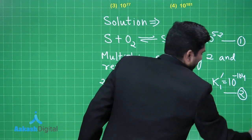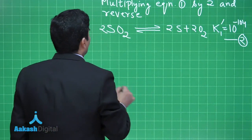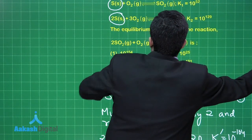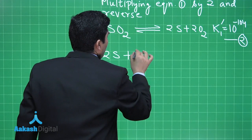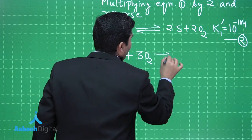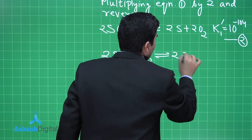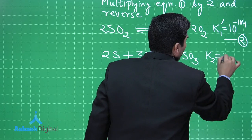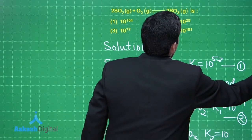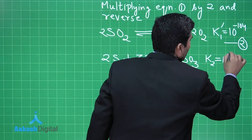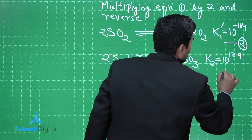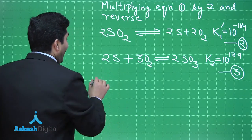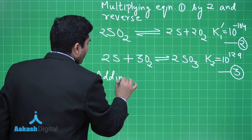Now the second given equation is 2S plus 3O₂ in equilibrium with 2SO₃ with K2 equal to 10 to the power 129. Let us call this equation 3. Now let us add equations 2 and 3 together.